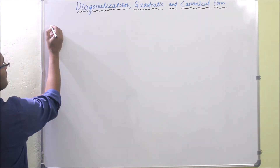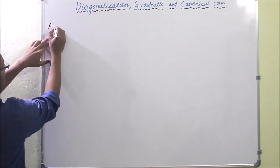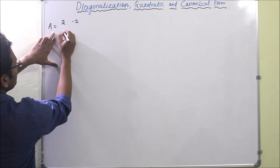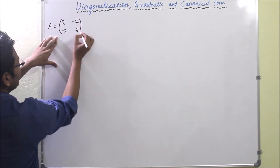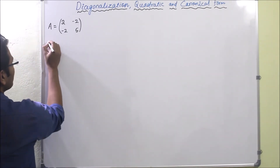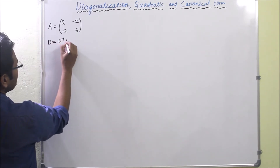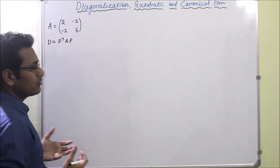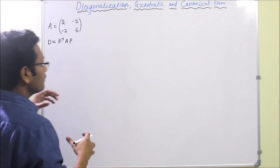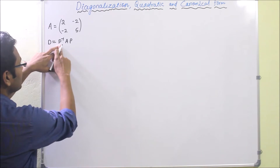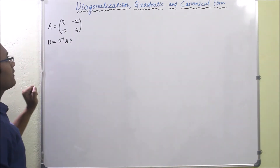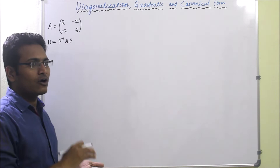We will take an example problem. Let matrix A be [[2, -2], [-2, 5]]. The formula to diagonalize is D = P⁻¹AP. We have discussed in the last class how to diagonalize a matrix: we construct the P matrix, where P consists of all the eigenvectors of A arranged column wise.